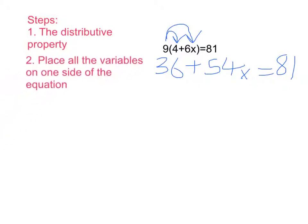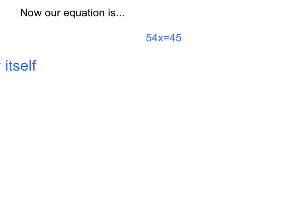Next, we must place all the variables on one side of the equation. Now, to do this, we must subtract 36 from both sides of the equation, which will leave us with 54x equals 81. Now, our equation is 54x equals 45.